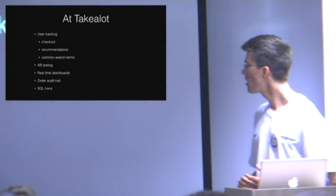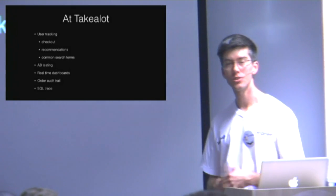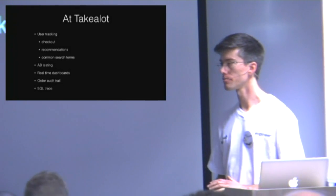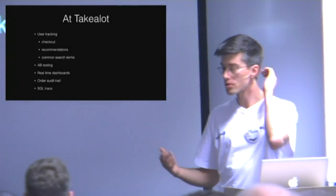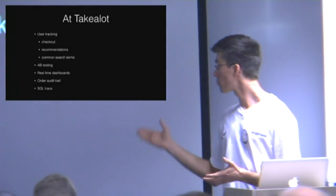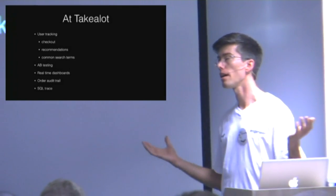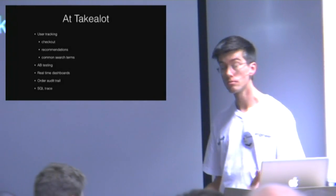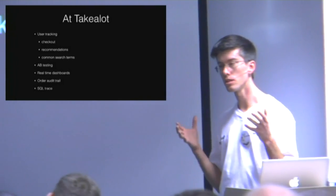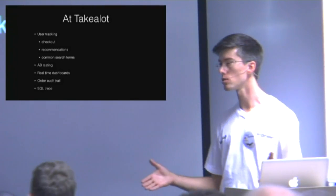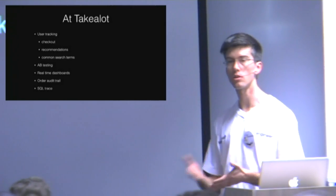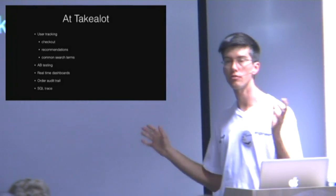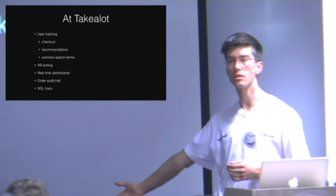Real-time dashboards — already mentioned. Order trails: when you write everything to a database, you know where you are but you don't know how you got there. A customer phones in and says their order never got shipped or they got the wrong thing. It's quite tricky to be super helpful if you have no idea how we got from A to B — we know what B is and we know A was somebody placing an order, but we don't know what happened in between. Classic example: with every state transition in an order, fire off an event, forget about it, something else picks it up and does something useful with it.